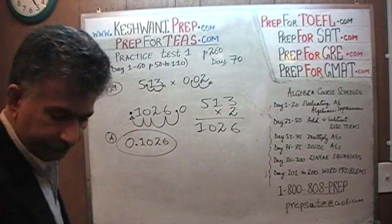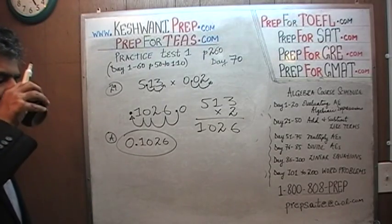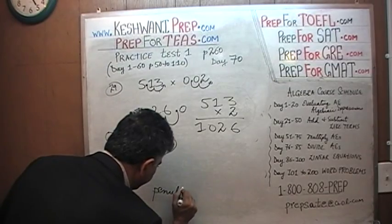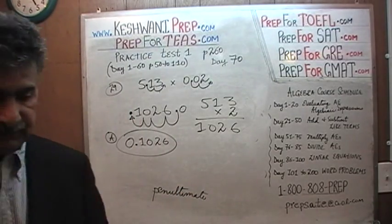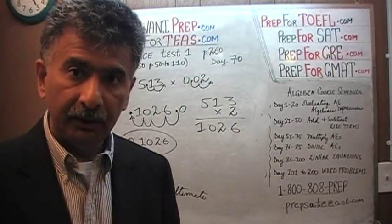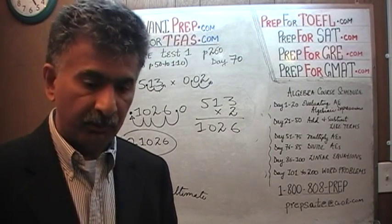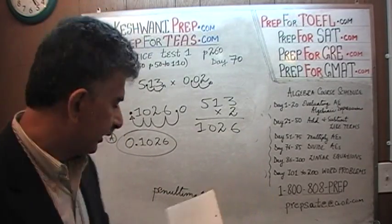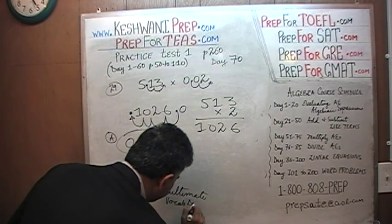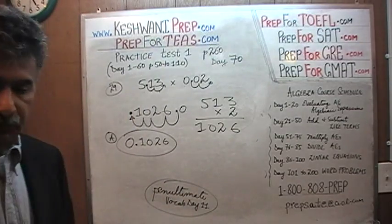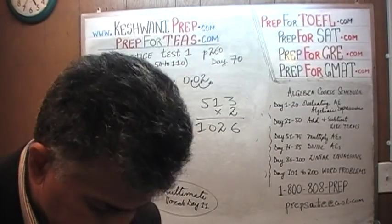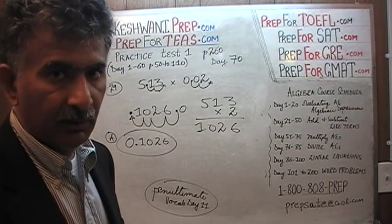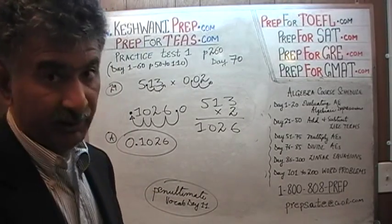The very last one, number 30. A little while ago we described number 29 as the penultimate problem — that's second to last. We did learn the word 'penultimate' in our vocabulary videos. If you type in 'Keshwani vocabulary words day 11,' you'll find that video. This was the penultimate problem, so let's do the ultimate one — the last one.